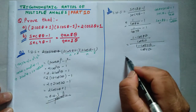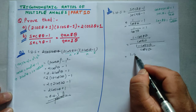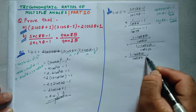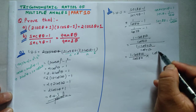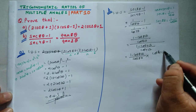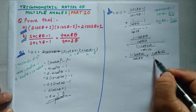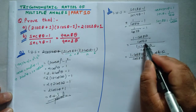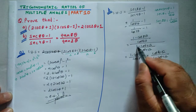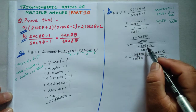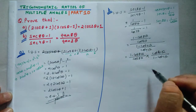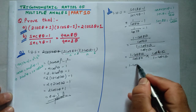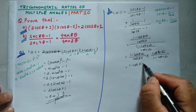This simplifies to (1 - cos8θ)/cos8θ × cos4θ/(1 - cos4θ). We now apply the half-angle substitutions with the 2θ and 4θ arguments.